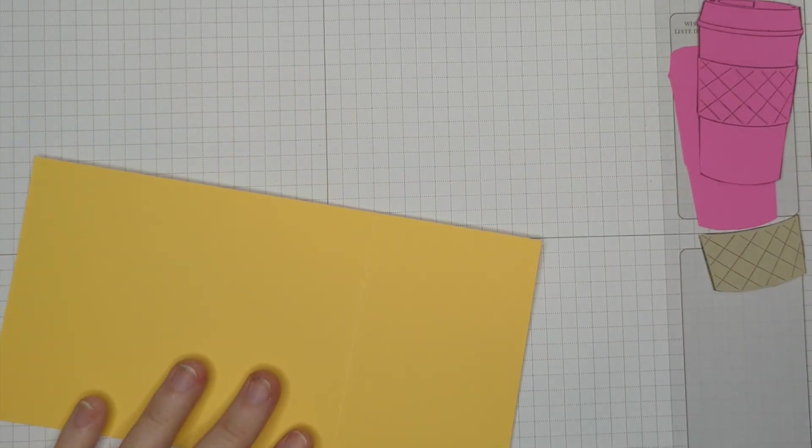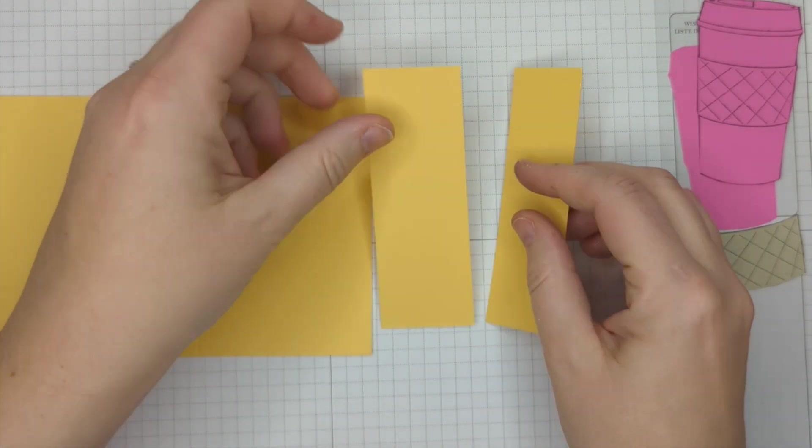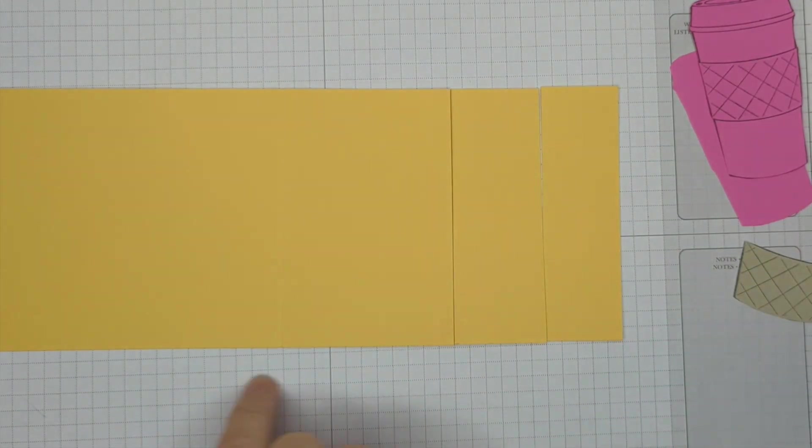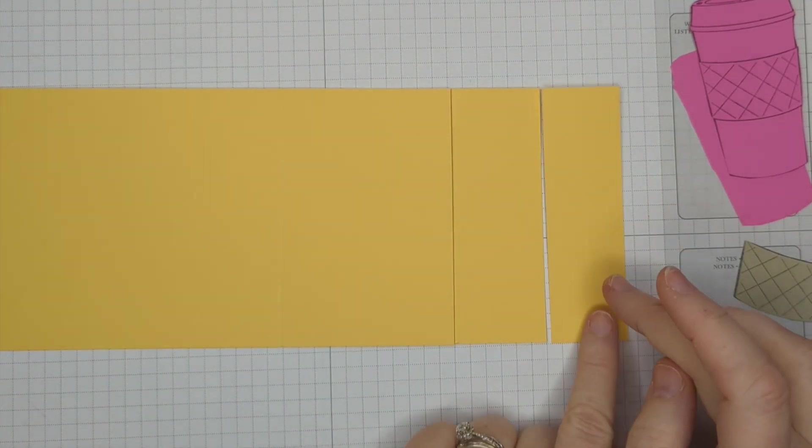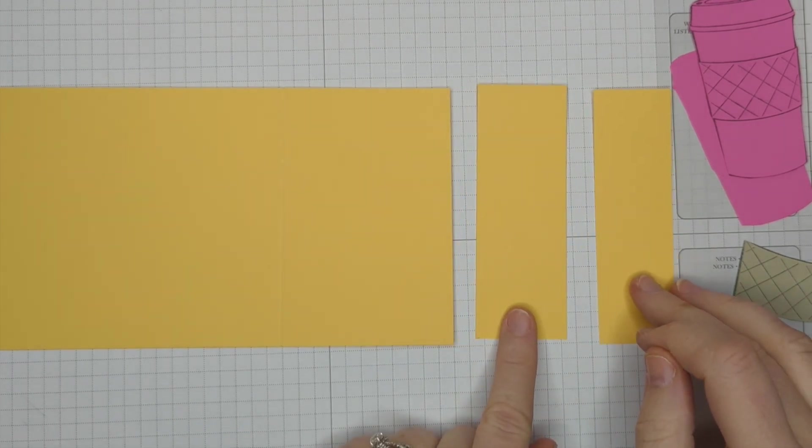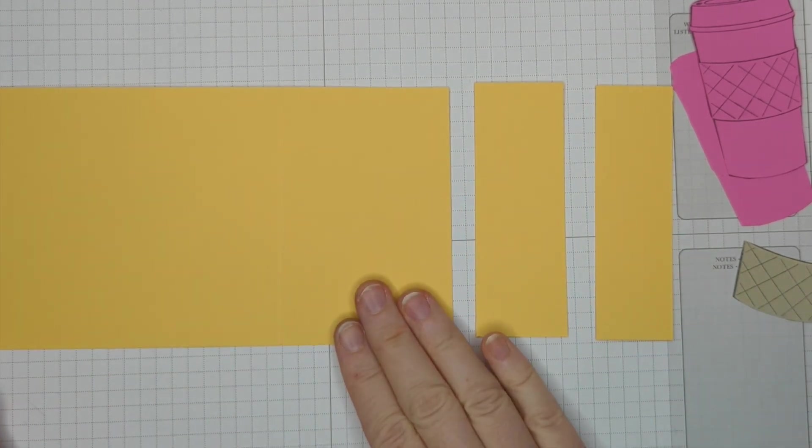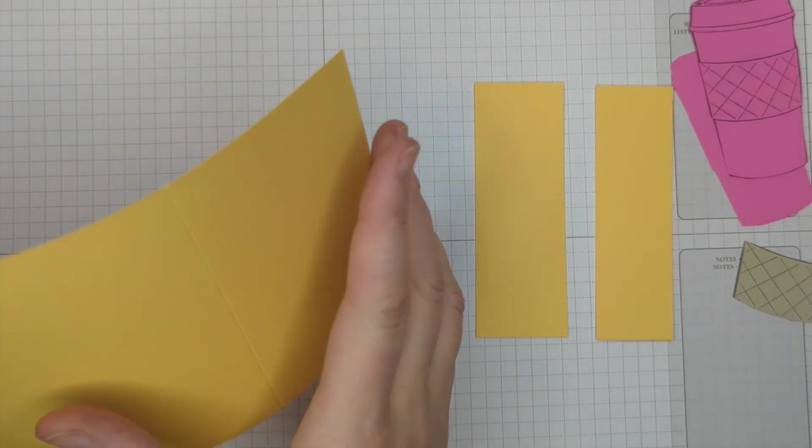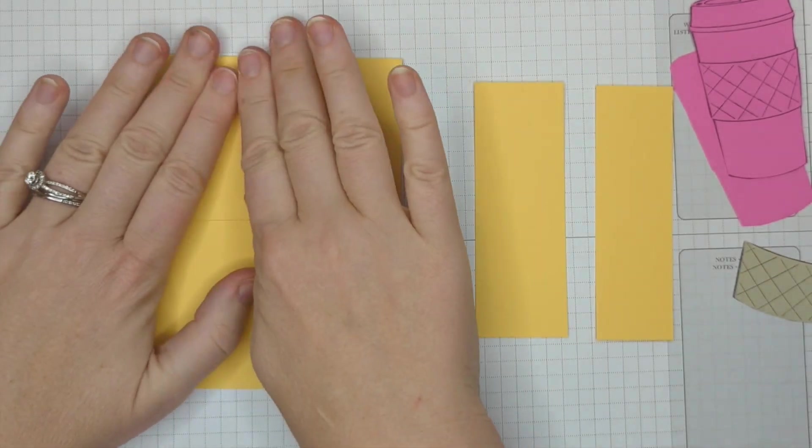So we're going to start off here with a piece of paper that is 4 1/4 by 11. And then here at the bottom you're going to cut off 1 1/4, then 1 1/2, and then you have the rest of the piece remaining. So from this side you're going to score it at 5 1/2, which allows you to have your card base.